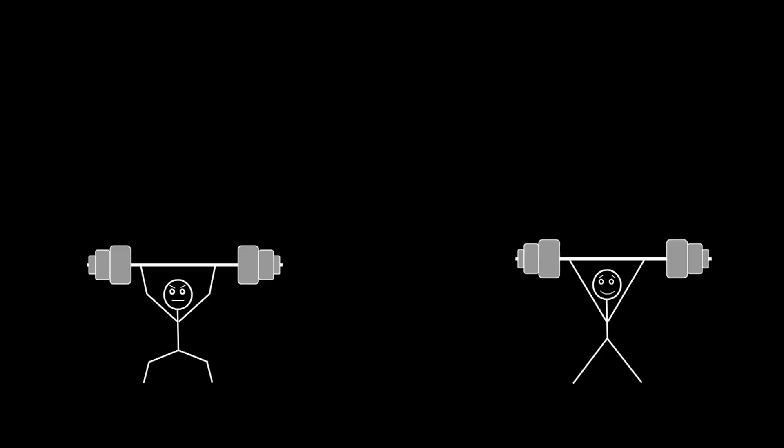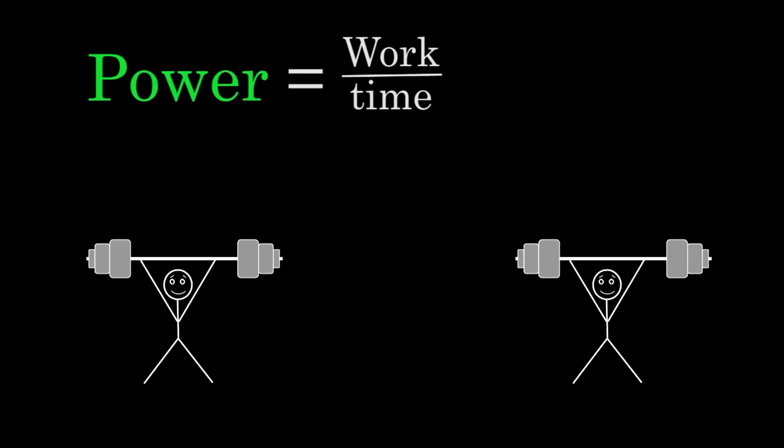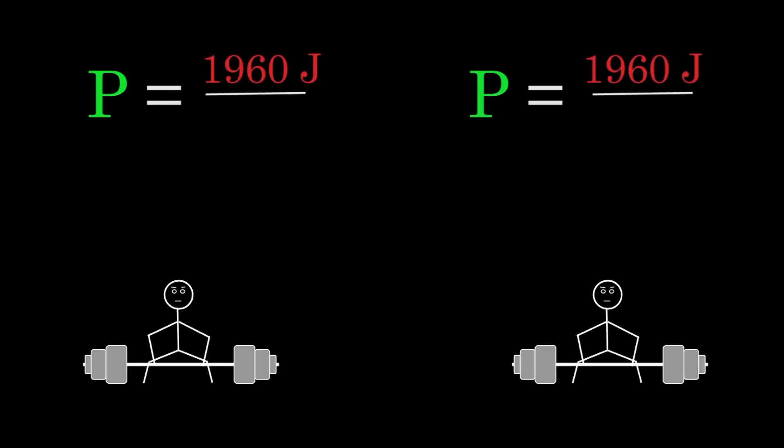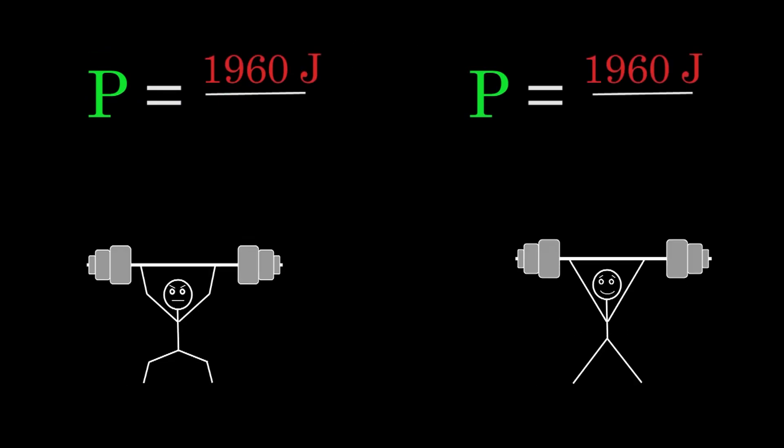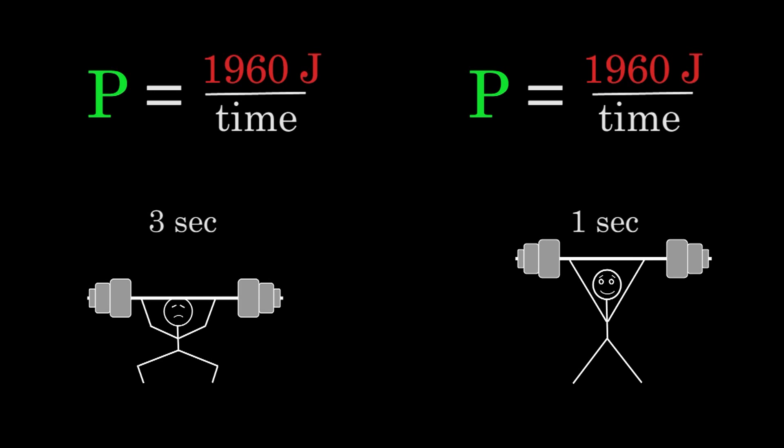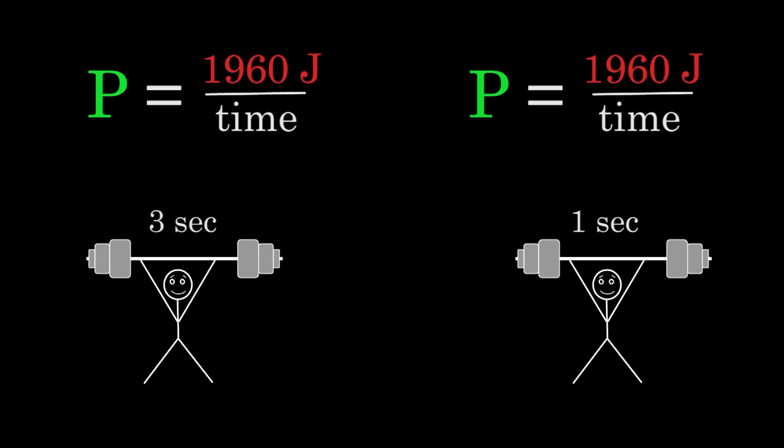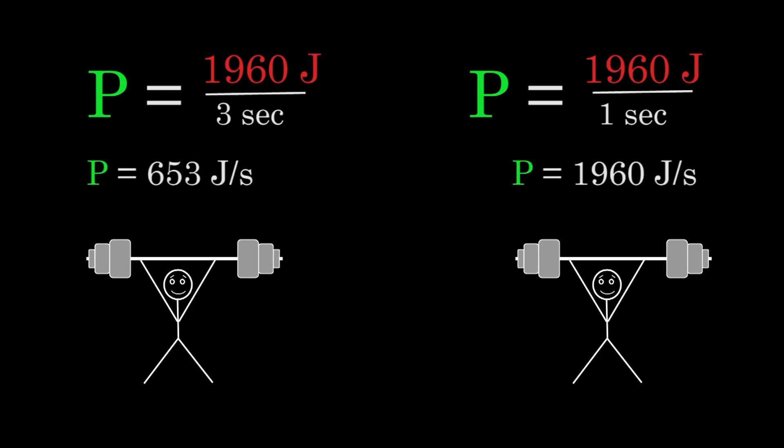To be specific, power is defined as the work done divided by the time that it took to do that work. We already said that both weightlifters are doing 1,960 joules of work. The weightlifter on the right takes 1 second to lift his weights and the weightlifter on the left takes 3 seconds to lift his weights. If we plug those times into the definition of power, we'll find that the power output of the weightlifter on the right during his lift is 1,960 joules per second.